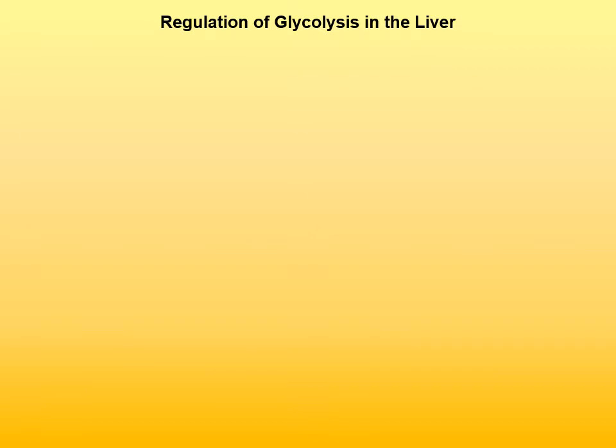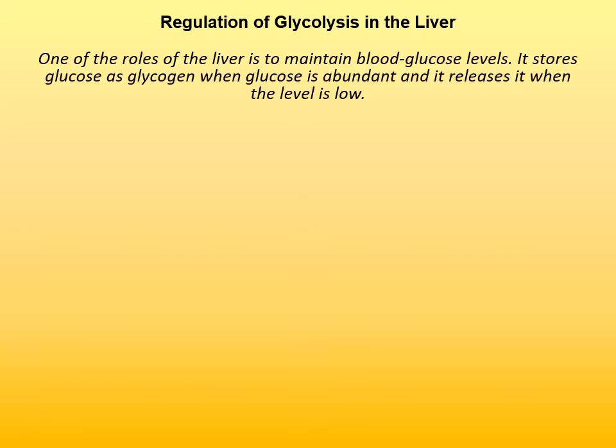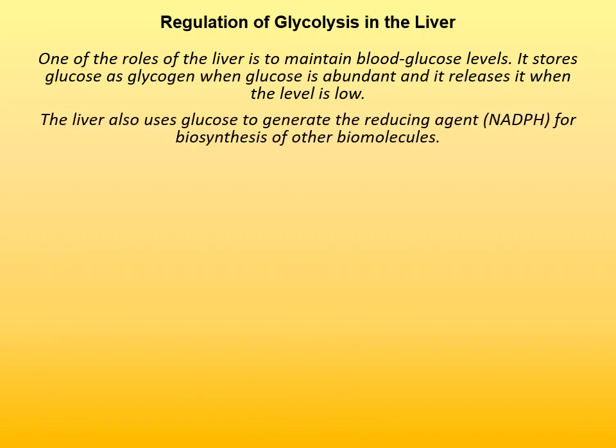In the liver, glycolysis is regulated very differently from muscle — or actually muscle and the brain, since regulation in muscles and brain is the same. One of the roles of the liver is to maintain blood glucose levels: it stores glucose as glycogen when glucose is abundant and releases it when the level is low. The liver also uses glucose to generate the reducing agent NADPH for biosynthesis of other molecules.